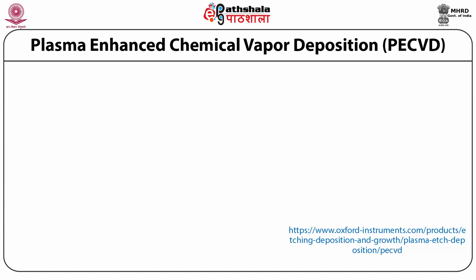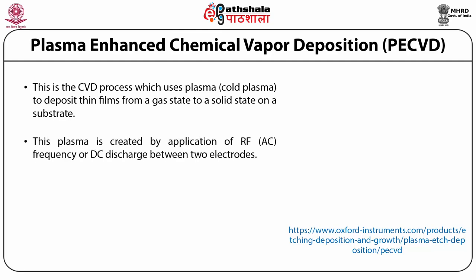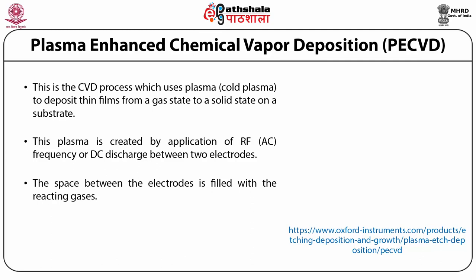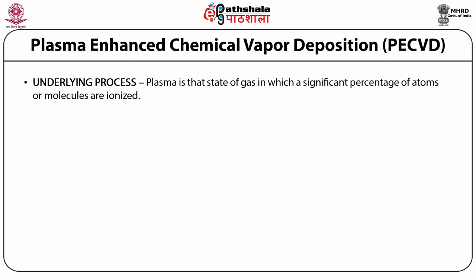Plasma enhanced chemical vapor deposition (PECVD) is the CVD process which uses plasma to deposit thin films from a gas state to a solid state on a substrate. The reaction involved occurs after the creation of plasma of the reacting gases. This plasma is created by the application of RF-AC frequency or DC discharge between two electrodes. The space between the electrodes is filled with the reacting gases. Through this process, films can be deposited on substrates at lower temperatures than standard CVD.